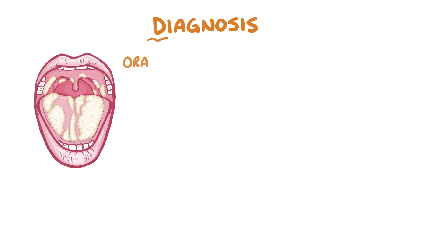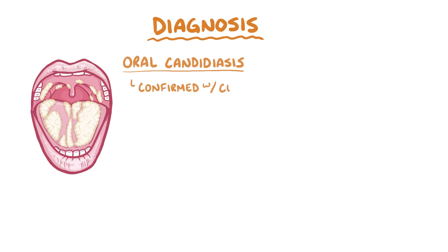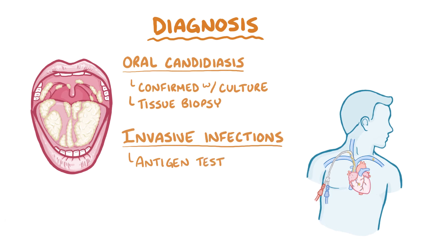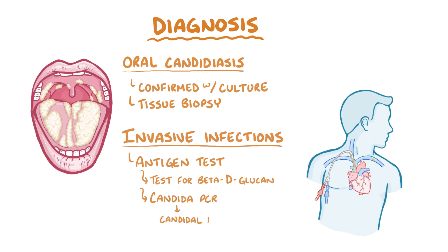Diagnosis of oral candidiasis can be confirmed with a culture, and ultimately a tissue biopsy might be done in some cases as well. For invasive infections, antigen testing can also be done. For example, one test looks for a cell wall component called beta-D-glucan, which is found in Candida and a few other fungal species. Another test is Candida PCR, which detects candidal DNA.